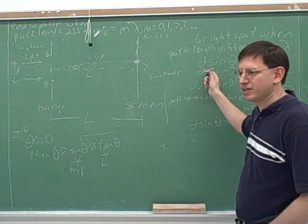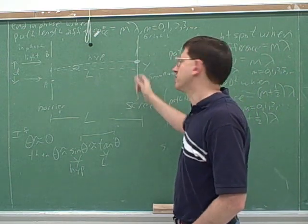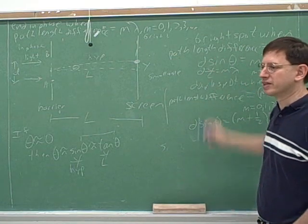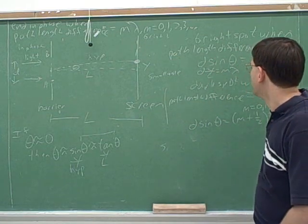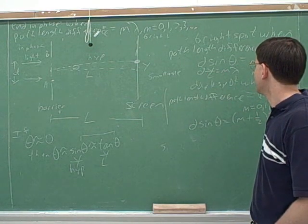Remember, you don't use this for all problems. You only use this when the spots are very close to the center line. So there'll be a lot of problems where you use this and a lot of problems where you'll use the regular formula. But sometimes you do have to use this for a small angle. D Y over L equals M lambda.